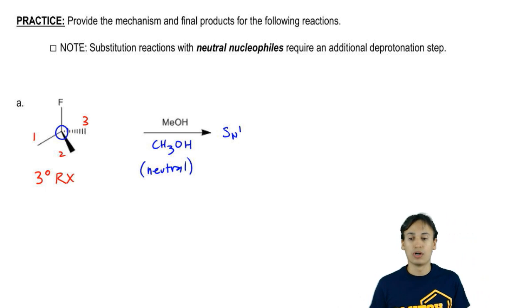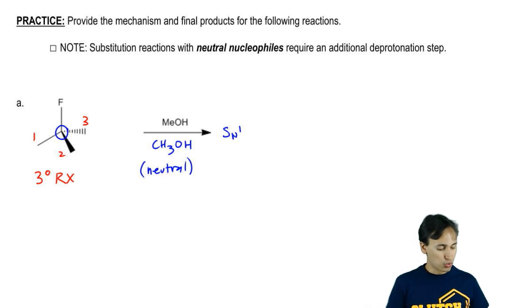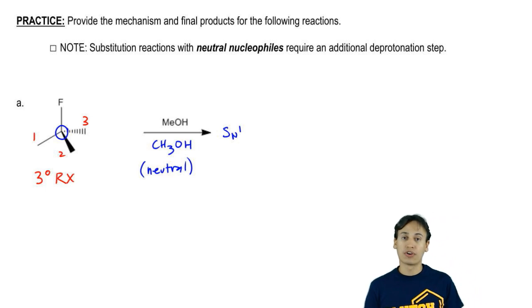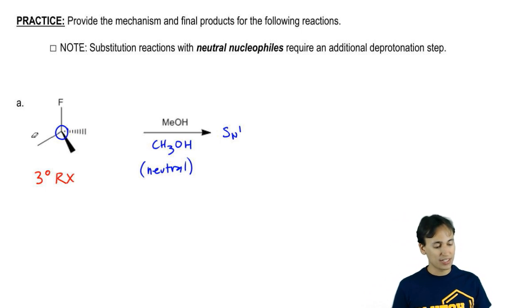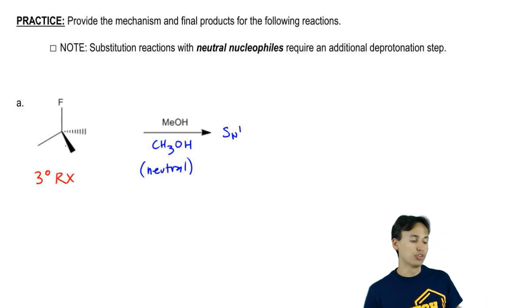Now that we've verified that this could be an SN1, let's just talk about the arrows. What would be the first arrow of an SN1 mechanism? What can we always say is going to be the first arrow? The leaving group leaving.